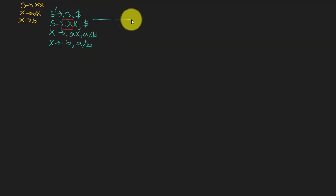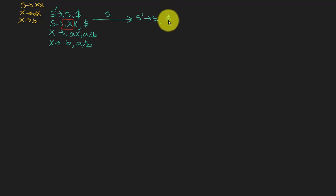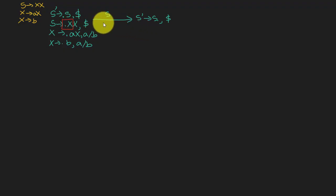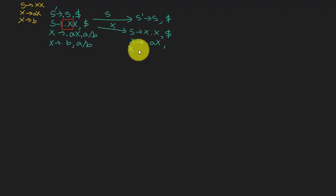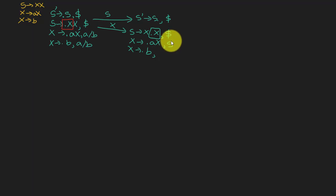On input S, we transition to S' goes to S dot, and the look-ahead remains dollar — transitioning does not change the look-ahead. The look-ahead only changes while applying closure. On input X, we get S goes to X dot X, and the look-ahead stays the same. Applying closure to X gives X goes to dot aX and X goes to dot b.